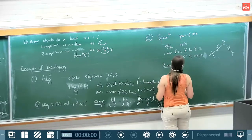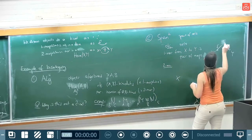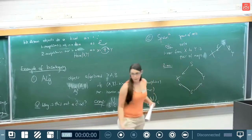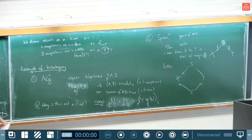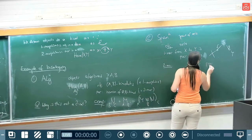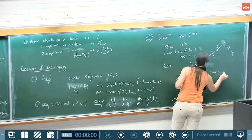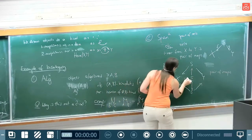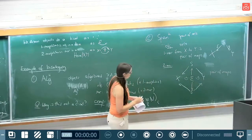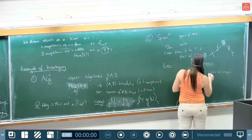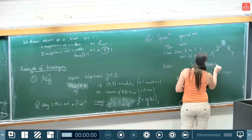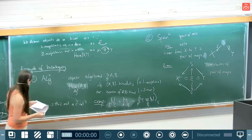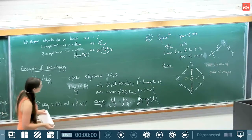For composition of one-morphisms in Spans — going back to the bimodule example — if we have an A-B bimodule M and a B-C bimodule, the composition is defined to be the relative tensor product, giving an A-C bimodule. This involves a choice of relative tensor product; there's a subtlety here. If we take the homotopy category by passing to isomorphism classes, this choice disappears. In the Spans case, composition is given by taking pullbacks, which also involves a choice.